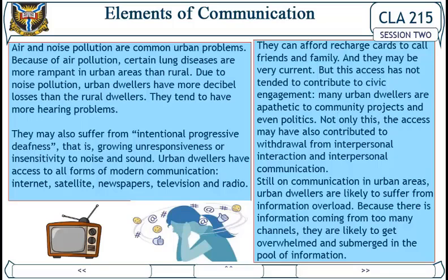Air and noise pollutions are common urban problems. Because of air pollution, certain lung diseases are more rampant in urban areas. Due to noise pollution, urban dwellers have more decibel losses than rural dwellers and tend to have more hearing problems; they may also suffer from intentional progressive deafness — that is, growing unresponsiveness to noise and sound. Urban dwellers have access to all forms of modern communication: internet, satellite, newspapers, television, and radio. They can afford to call friends and family, and they may be very current.